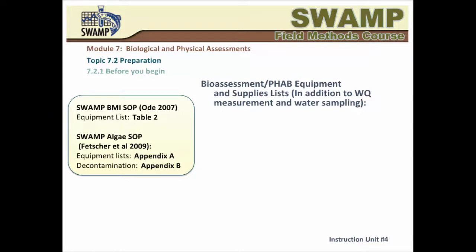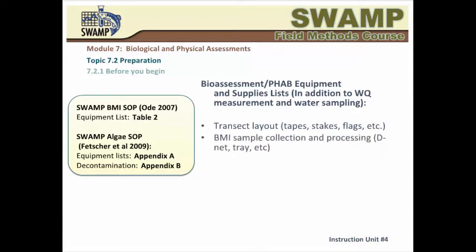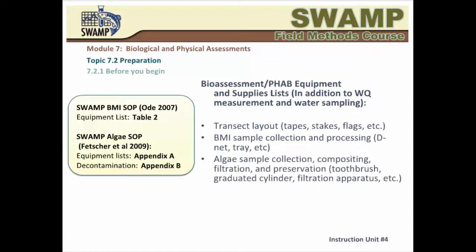Table 2 of the BMI SOP and Appendix A of the Algae SOP provide very comprehensive lists that cover, beyond your field measurements and water sample collection kits, the equipment you will need for transect layout, BMI sample collection and processing — for example, D-Net, alcohol — and the equipment for collection, compositing, filtration, and preservation of an algae sample — for example, rubber delimiter, toothbrush, graduated cylinder, filters, formaldehyde, and so forth.